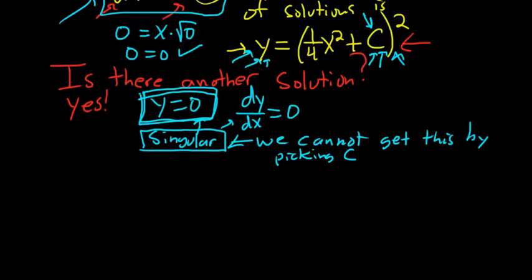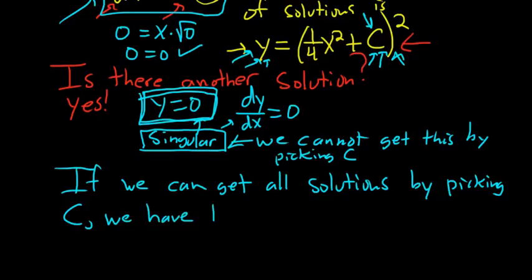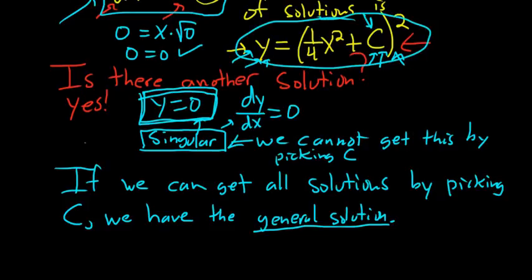If it turns out you can get every single solution by picking values of c, then that family is called the general solution. In this case, the one-parameter family is not the general solution because y equals 0 is a singular solution that cannot be obtained from it. Whenever you have a linear differential equation, you always have the general solution — that's a major result from differential equations.